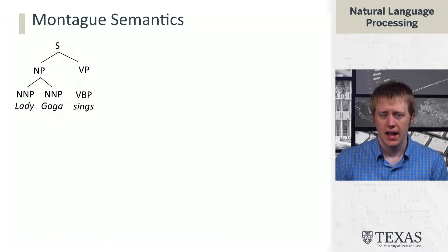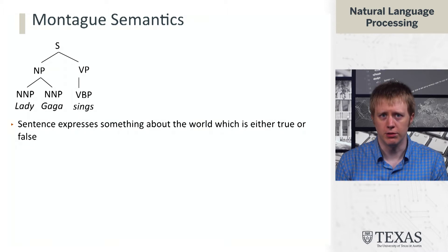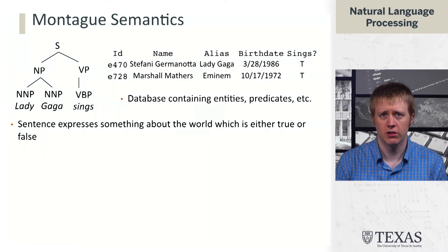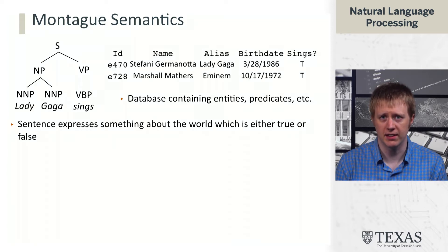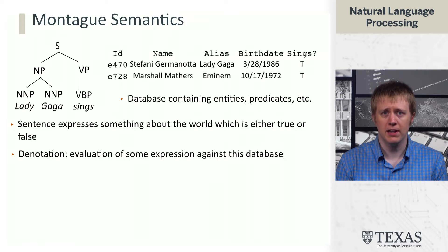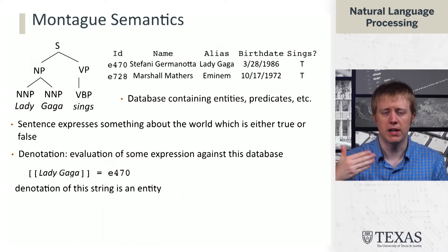We're going to take our example of 'Lady Gaga Sings' as our running example. We're going to be operating in a framework called Montague semantics, due to Richard Montague, where we view this sentence as expressing something about the world which is either true or false. We have this notion of a world — a database that contains entities and values of predicates on them. For example, we have Lady Gaga and Eminem, and the predicate 'sings' is set to true for both of them. So this statement 'Lady Gaga Sings' is true, and when we think about its denotation — the result of evaluating it against this database — we can make this concrete.